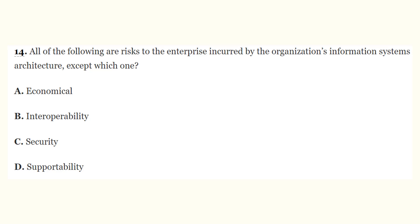Question number fourteen: all of the following are risks to the enterprise incurred by the organization's information systems architecture, except which one? A) economical, B) interoperability, C) security, D) supportability. The correct answer is A, economical. While there is financial risk involved in capital expenditures of IT, economical risk is not one specifically introduced into the enterprise as a direct consequence of the IT infrastructure.